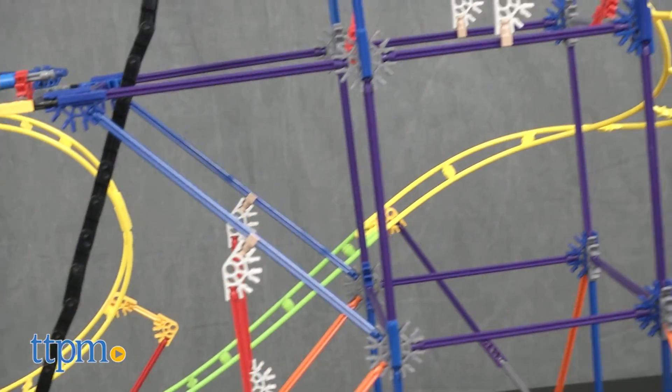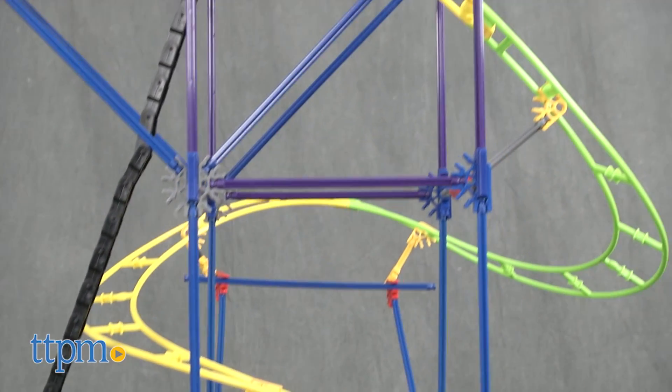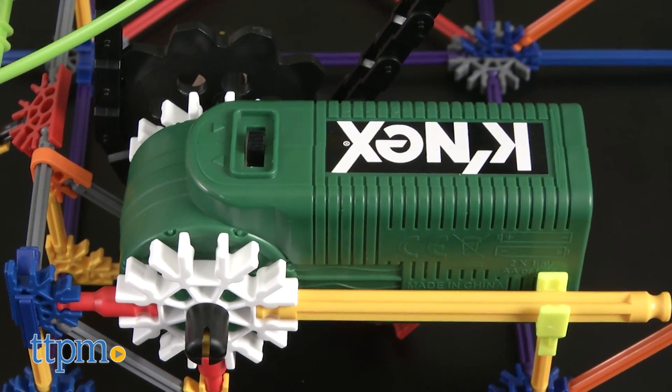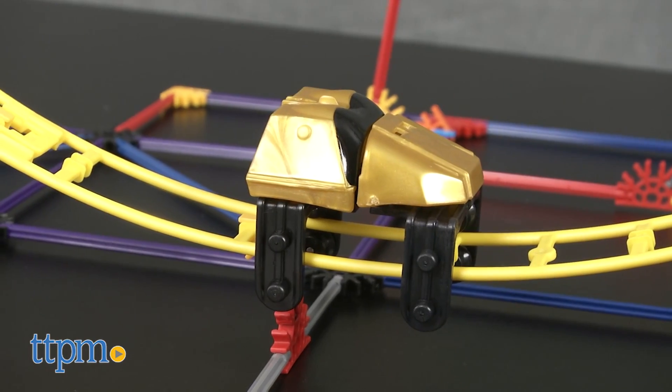It comes with 546 pieces to build the roller coaster, ramp, and half pipe battery-powered motor, coaster car, and instruction guide.